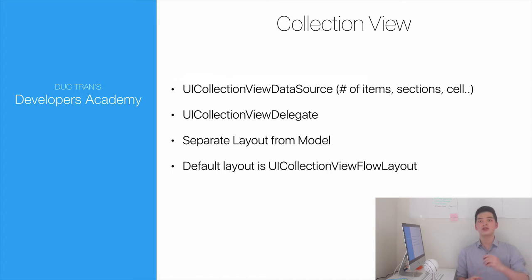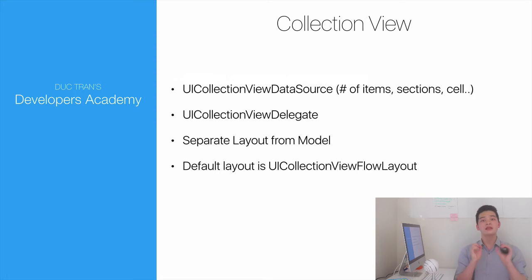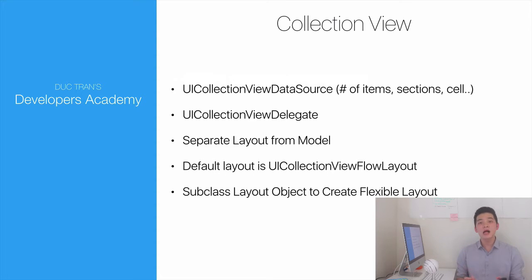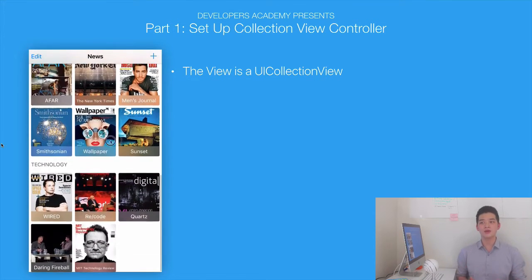If you transition from a table view to a collection view, there will be a lot of similarities. Those similarities are the data source and the delegate. But the difference is that a collection view has a layout object. The reason why we can so easily customize the collection view is that we can subclass this layout object to create our own layout. And we will talk about that in this course.